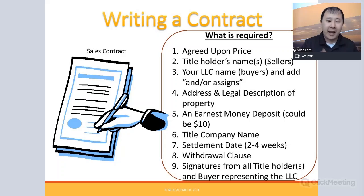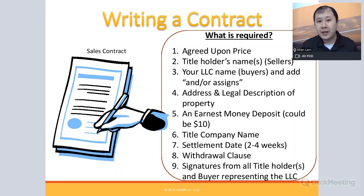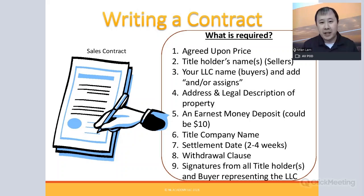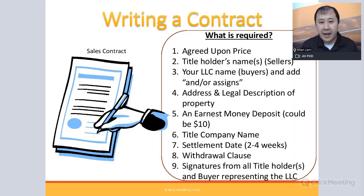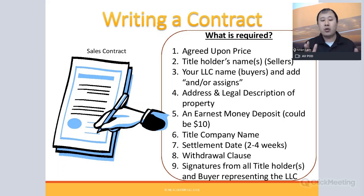Information needed for the contract includes: the agreed purchase price; the title holder's name — pull tax records to confirm everyone on title is included; and for yourself, you list your LLC rather than your personal name to protect your assets. After the LLC name, add the language 'and/or assigned' — that's what makes the contract assignable. Also include the property's legal description and address.